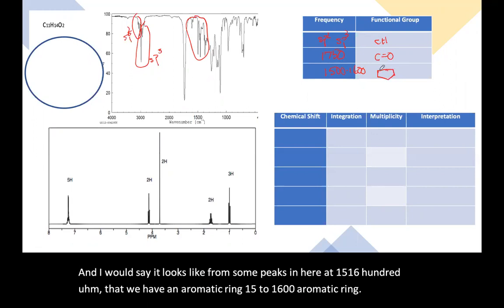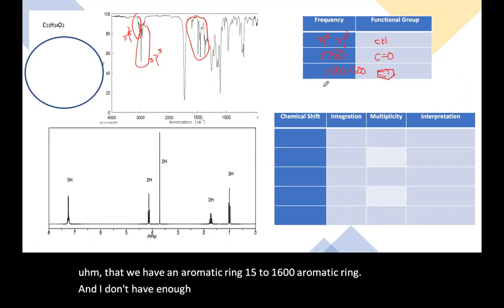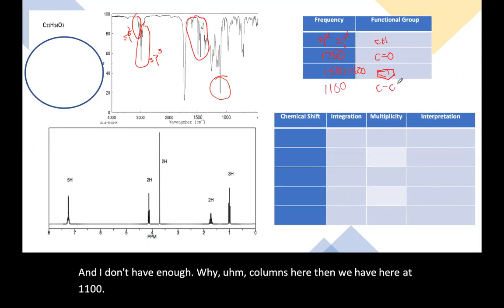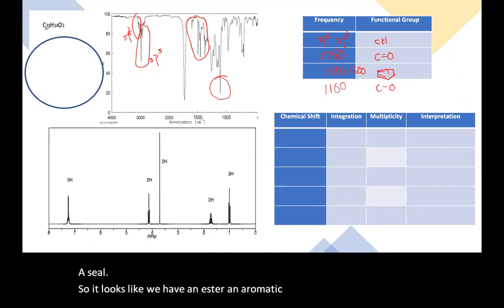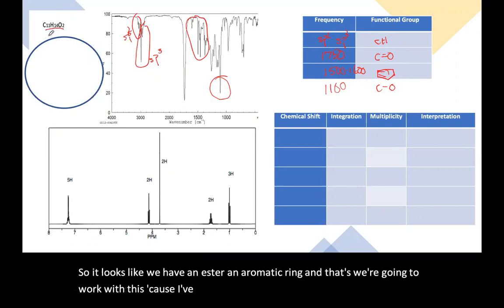And I don't have enough columns here. Then we have here at 1100, a C-O. So it looks like we have an ester and an aromatic ring, and that's going to work with this. Cause I've got two oxygens. It looks like enough carbons for an aromatic ring.